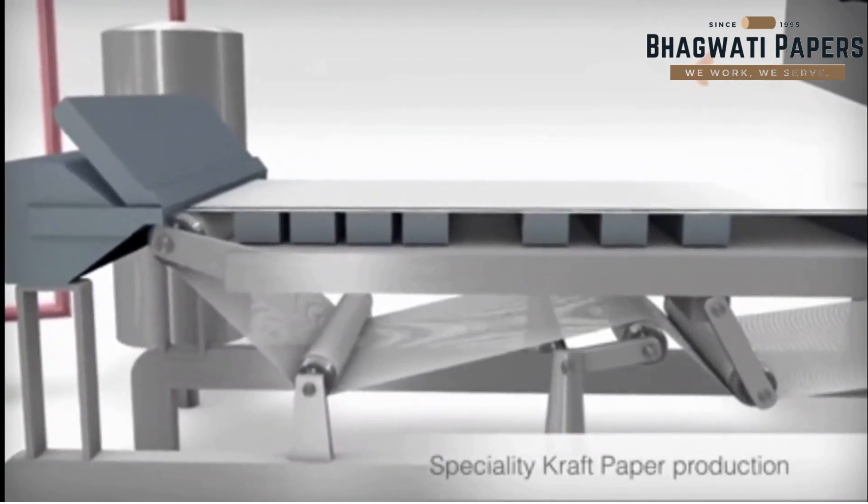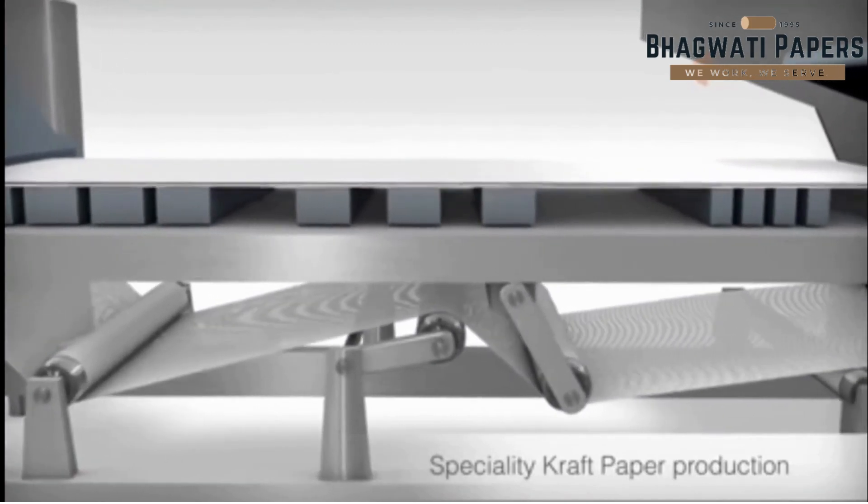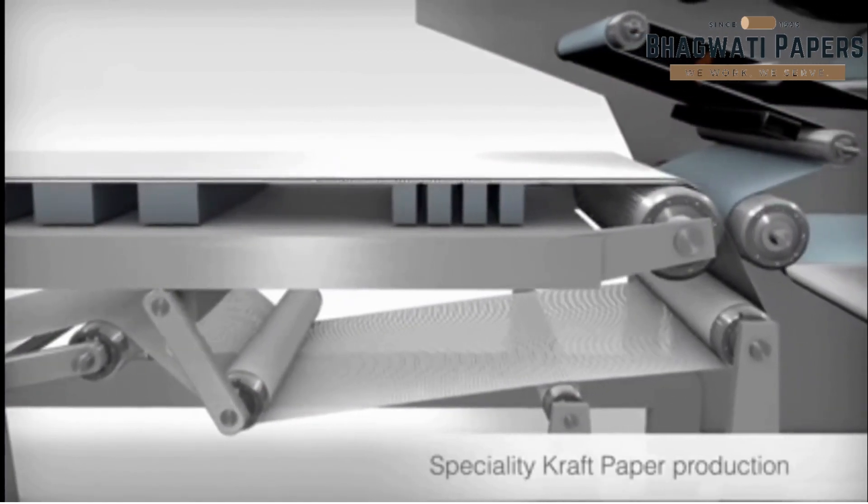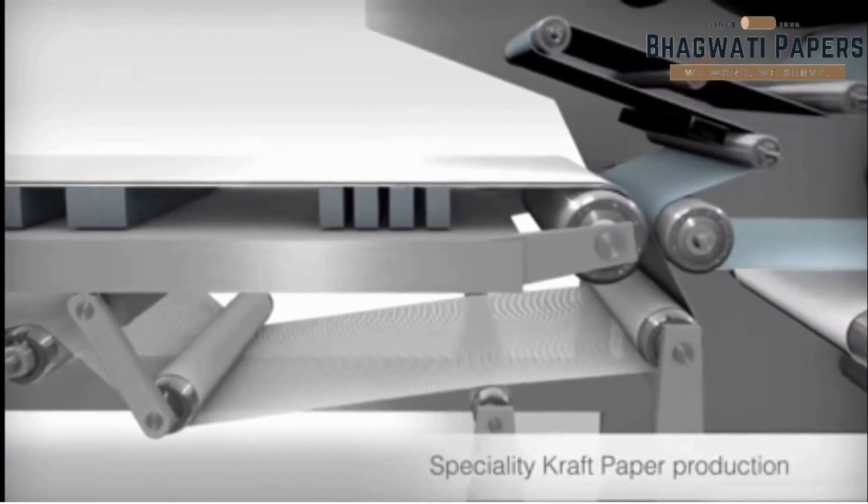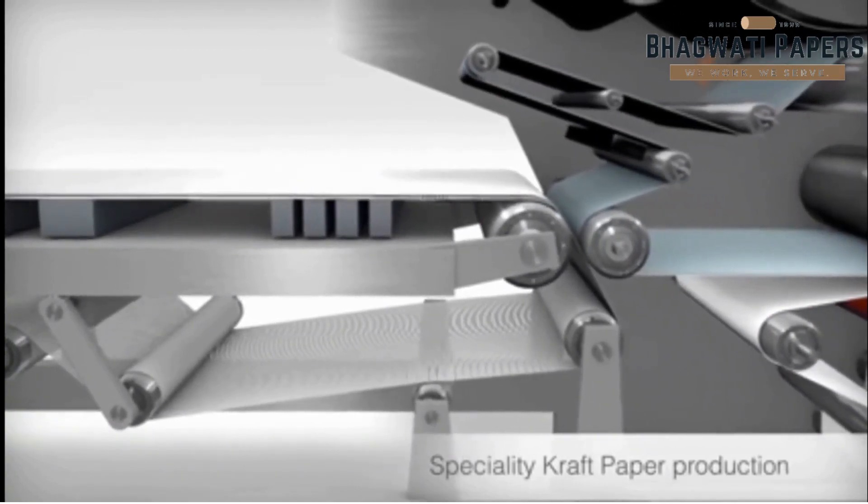At the beginning of the wire section, dewatering takes place without a vacuum. But in the lower part of the wire section, the dewatering elements are assisted by a vacuum. The extracted water is recycled for use in diluting the pulp.